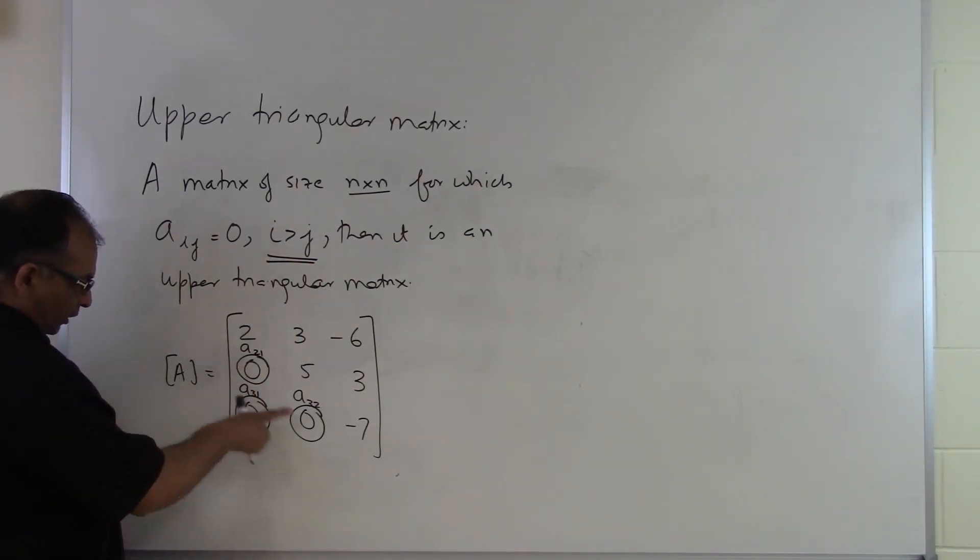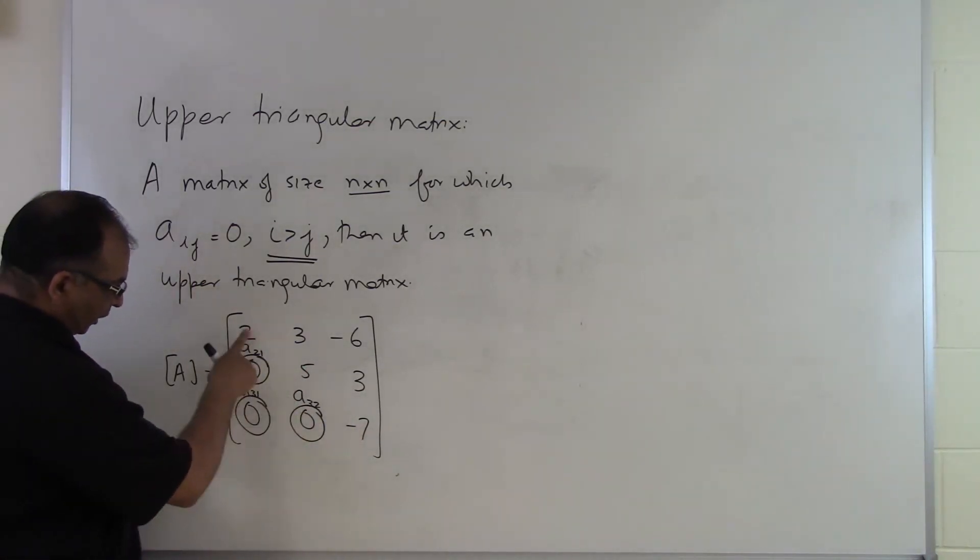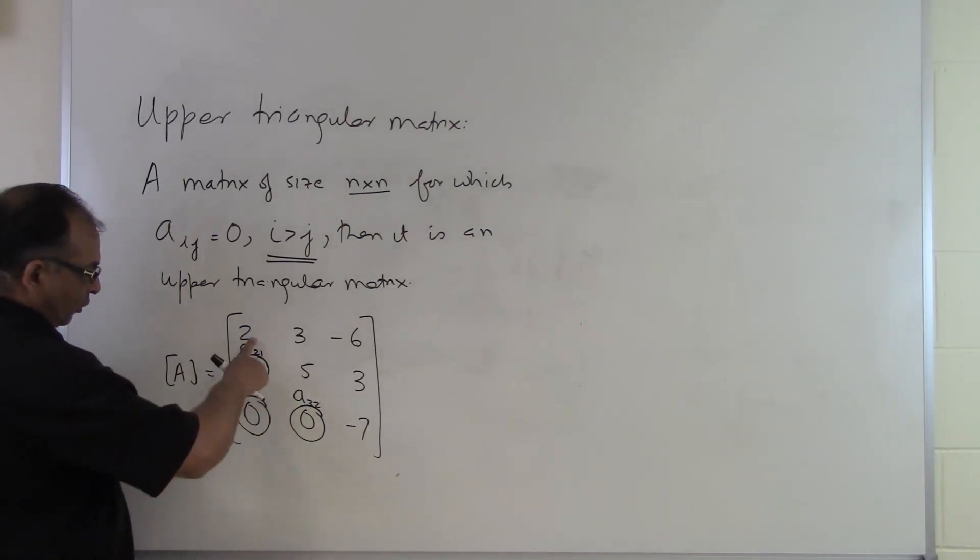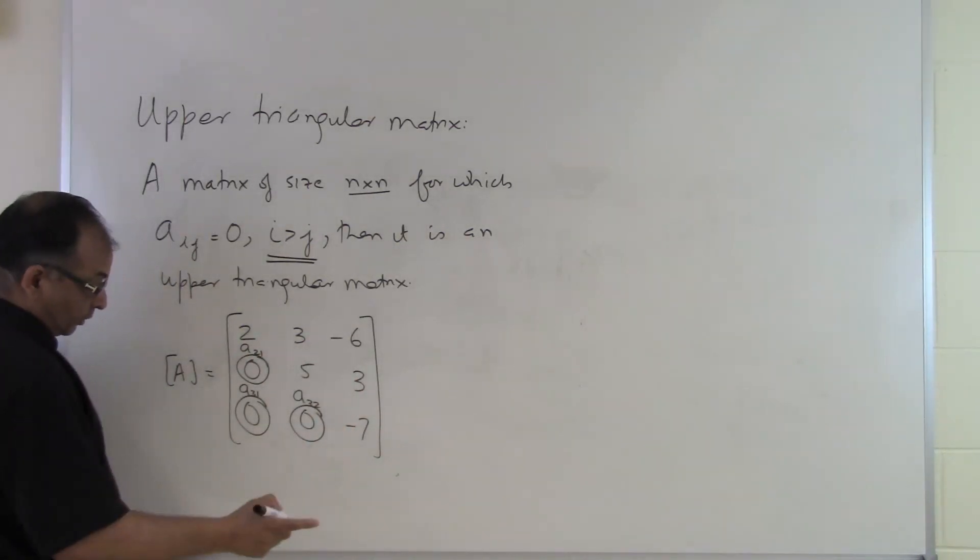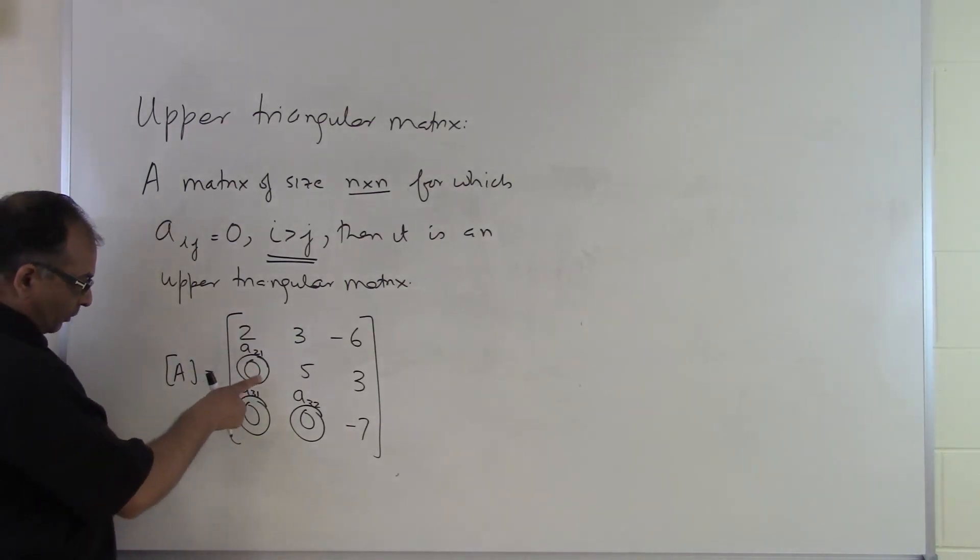So it is only where the zeros are which dictate whether a particular matrix is upper triangular. Many times students think that it depends on which elements are non-zero. Any of these elements which are on the diagonal of the matrix or which are above the diagonal, they can be 0 or non-zero. But a particular matrix is considered to be upper triangular based on the fact that any element for which the row number is bigger than the column number has to be 0.